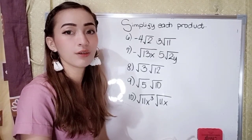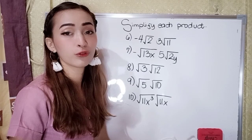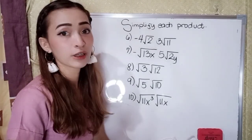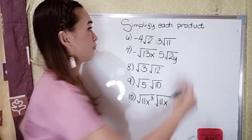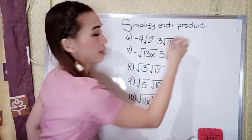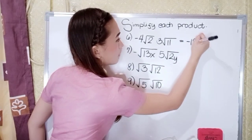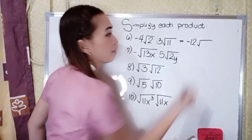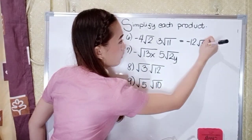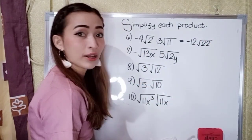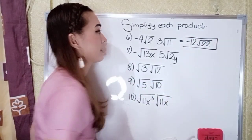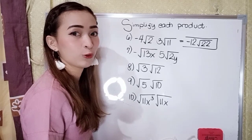For number six, we have negative four square root of two times three square root of eleven. Multiply the numerical coefficients: negative four times three is negative twelve. Then multiply the radicands: two times eleven is twenty-two. Since twenty-two is not a perfect square, our answer in number six is negative twelve square root of twenty-two.